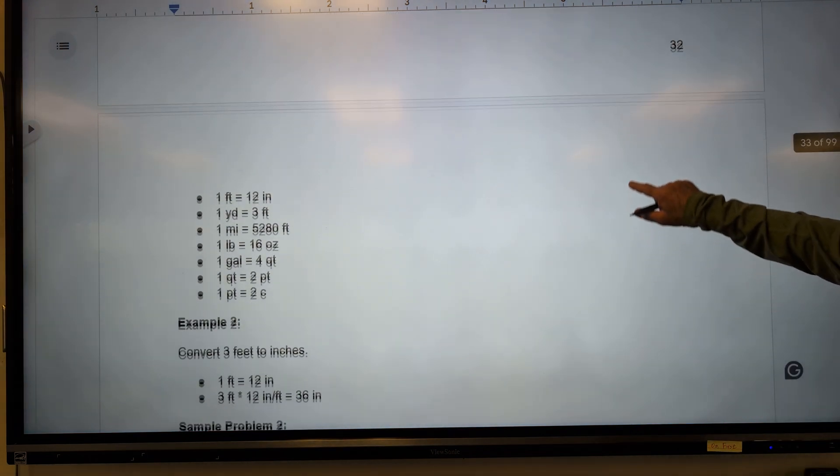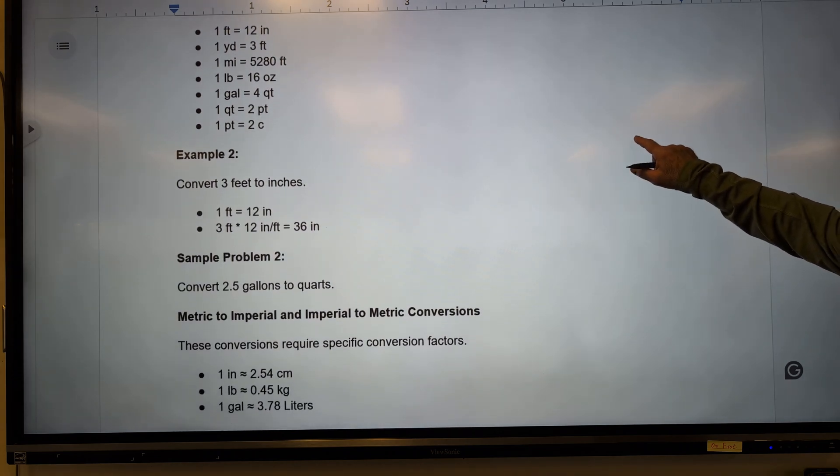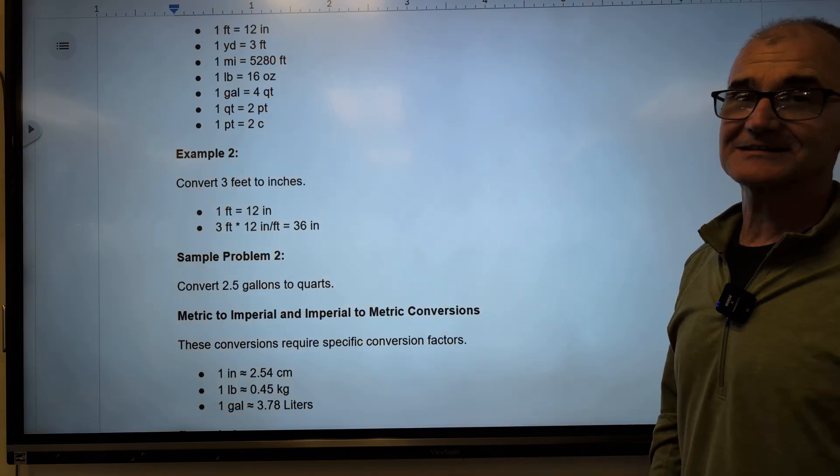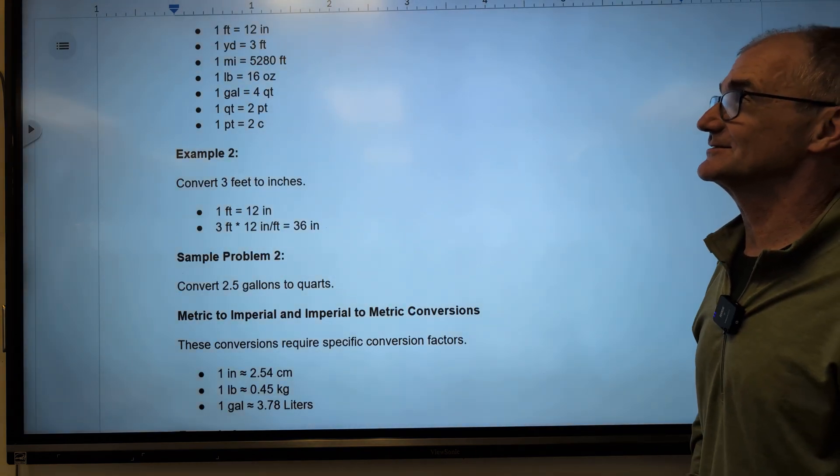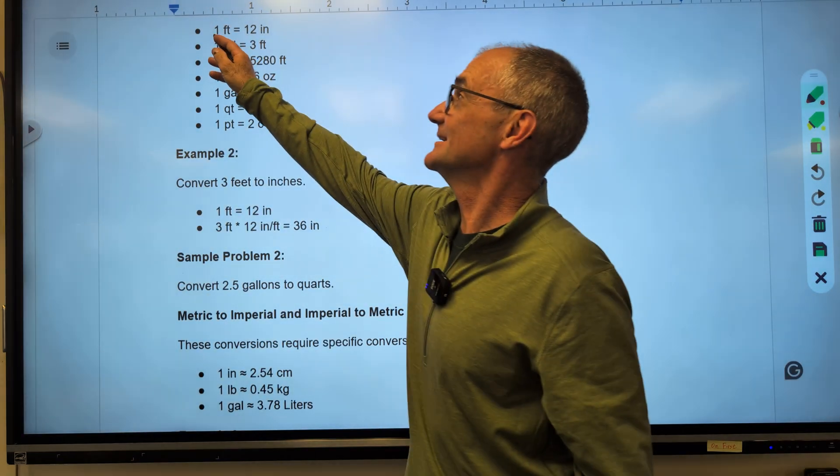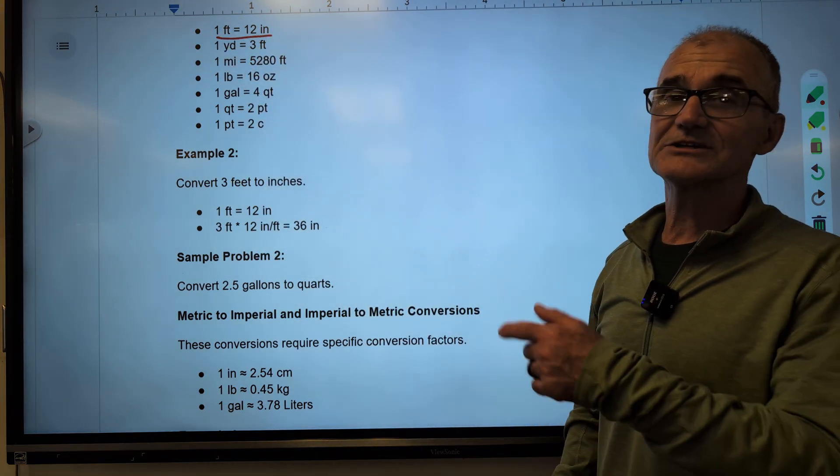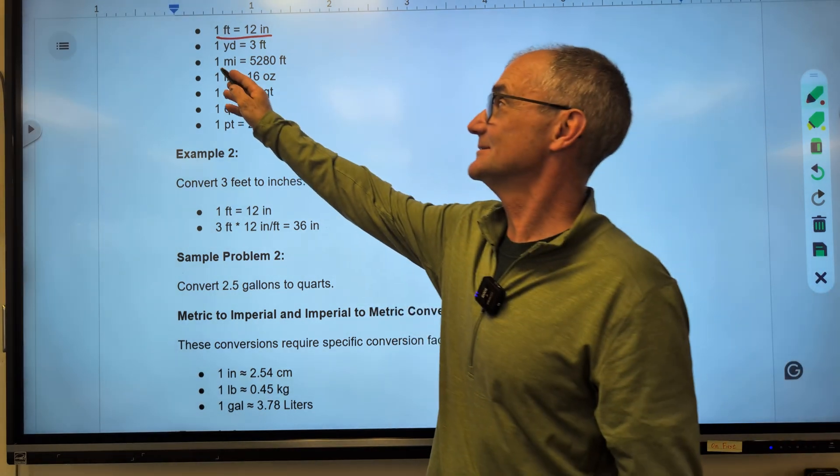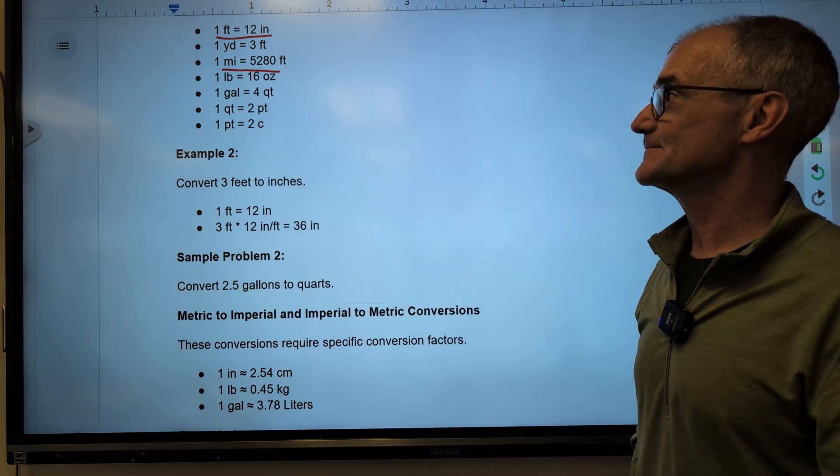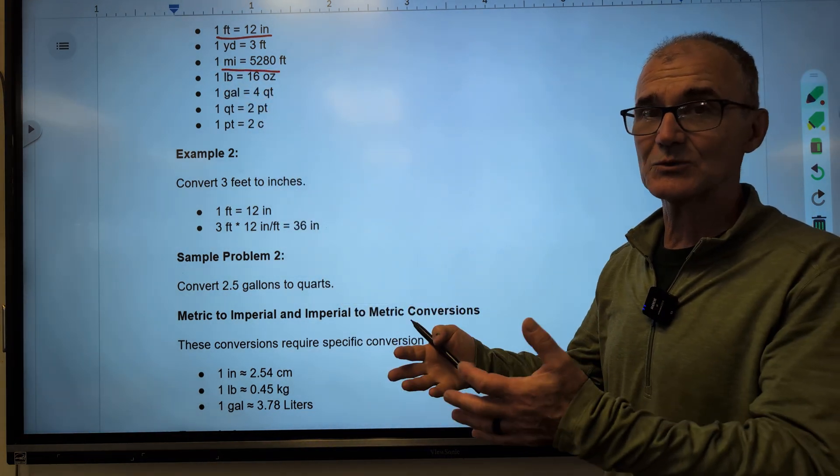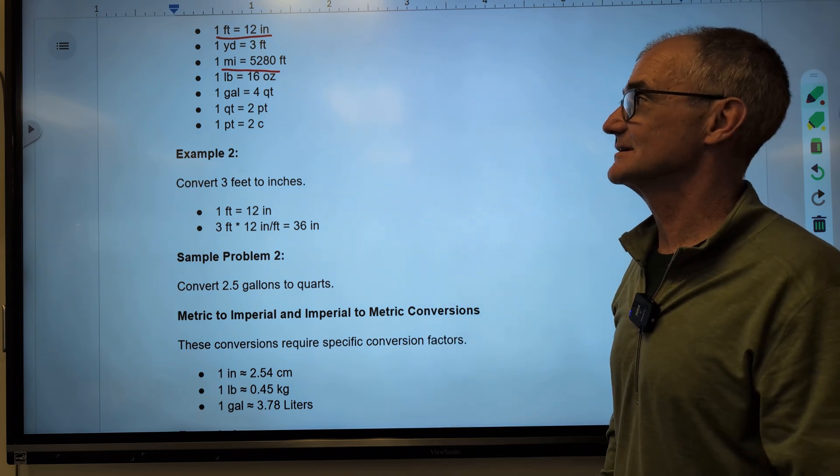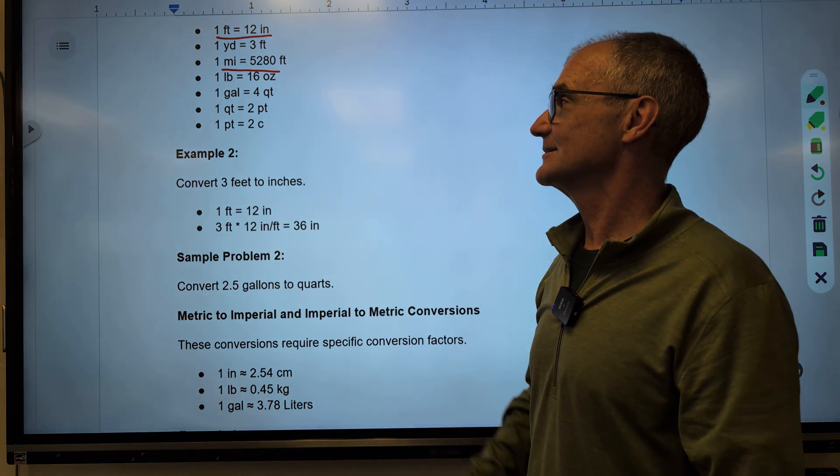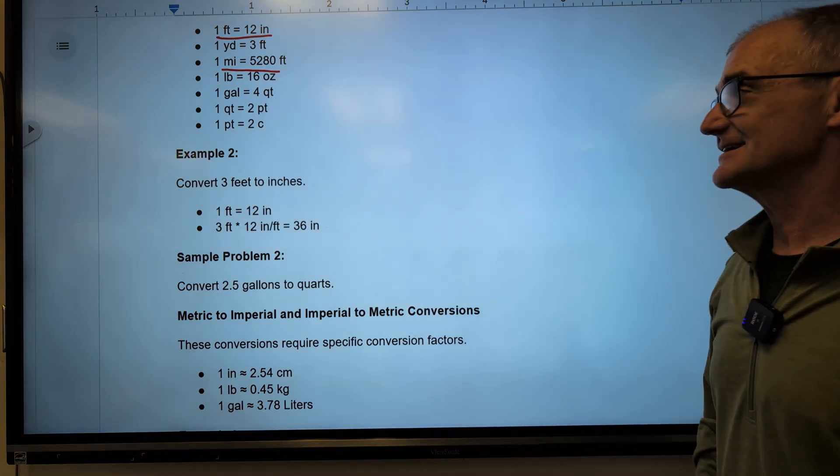All right, moving on to imperial conversions. These are pretty hard. To be fluent in these, you just need to spend a ton of time around them. I've been around them my whole life, so they're not too hard. But 1 foot equals 12 inches. 1 yard is 3 feet. 1 mile is 5,280 feet. 1 pound by weight is 16 ounces. 1 gallon is 4 quarts. 1 quart, 2 pints. 1 pint, 2 cups. Not easy.